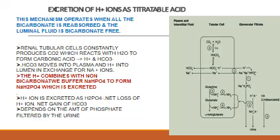The third mechanism is the excretion of hydrogen ions as titratable acid. This mechanism operates when all the bicarbonate is reabsorbed and the luminal fluid is bicarbonate-free. The renal tubular cells constantly produce carbon dioxide, which reacts with water in the presence of carbonic anhydrase to form carbonic acid. The carbonic acid splits into hydrogen ions and bicarbonate. The hydrogen ions move into the lumen in exchange for sodium ions, and the sodium ions move out to the plasma, while bicarbonate ions also move into the plasma.